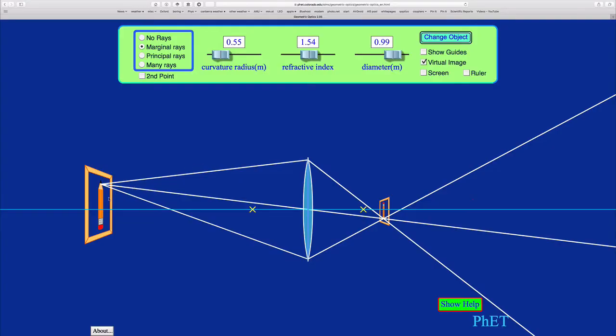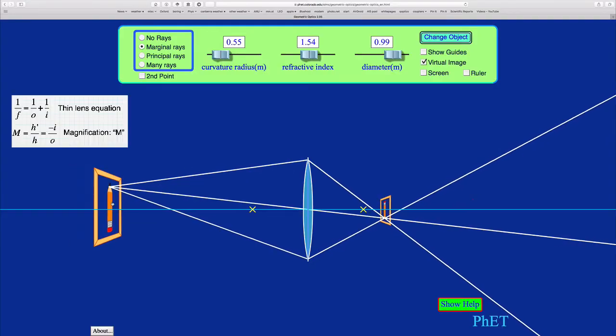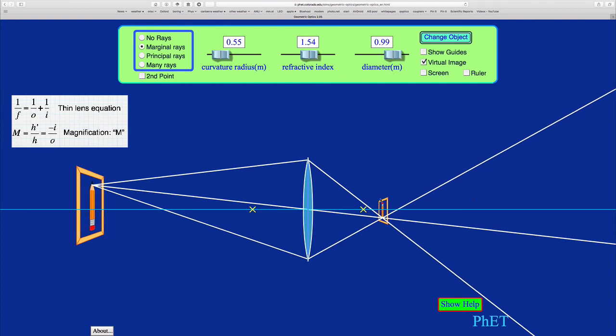So let's just look at that in the simulation again. So in this case, we have M being negative, and also the size of M here will be less than 1. And we can see the image is formed on the other side of the lens here, so the object distance and the image distance here are both positive.